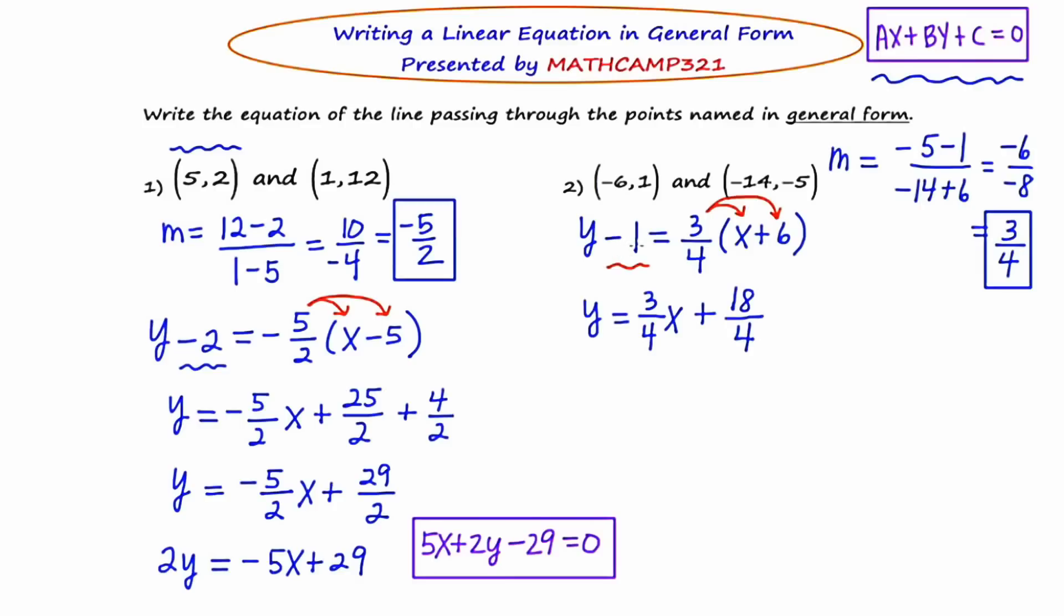I'm going to deal with the minus 1 at the end, so don't get nervous. Y equals 3 fourths X plus 18 fourths. To get rid of this minus 1, I have to add 1 to both sides. But instead of thinking of it as adding 1, I'm going to add 4 fourths. When I combine my like terms, I end up with Y equals 3 fourths X plus 22 fourths.